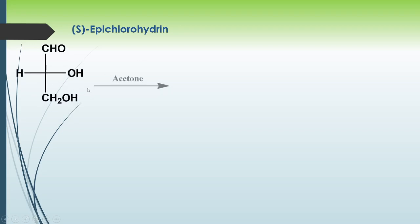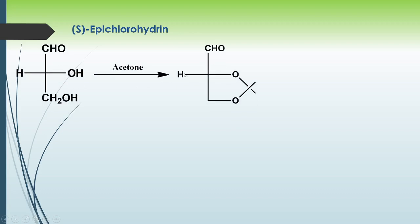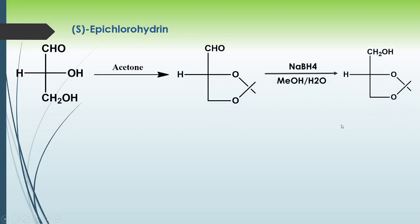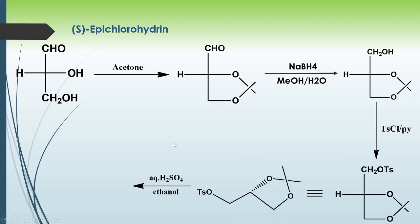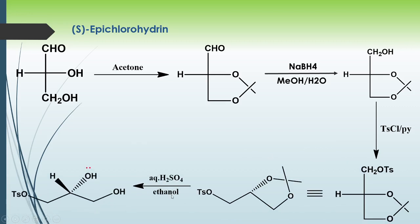Again we start from the glyceraldehyde molecule. In the first step there is diol protection, then reduction of the aldehyde to an alcohol, then protection of the OH as OTs to give the tosylated product, followed by deprotection of the diol using aqueous H₂SO₄ in the presence of ethanol.